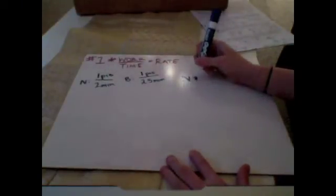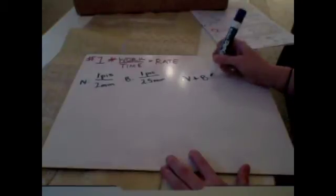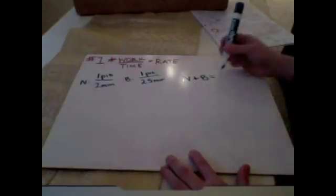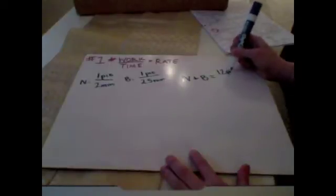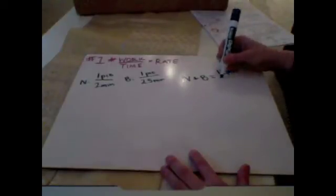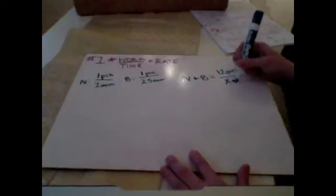How long will it take a team of Nolan and Brandon to polish off a table of 12 pies? So we really want to deal with the rate of Nolan plus Brandon to get their rate together, where they together, their work will create 12 pies in X number of minutes.